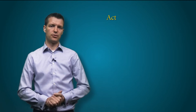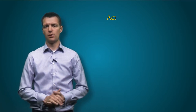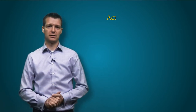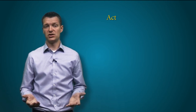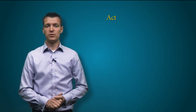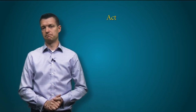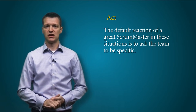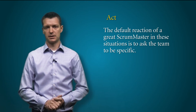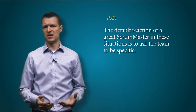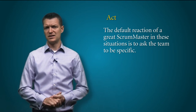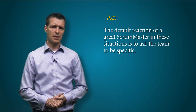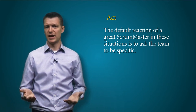Act on improvements. Teams often come up with 'we should communicate better' in their retrospectives, and there's nothing wrong with that. Who can argue against improved communication? You might even see some improvements just by noting the problem. However, the default reaction of great scrum masters in these situations is to ask the team to be more specific: Who needs to communicate better with whom? What do they need to communicate better about? When does this communication need to happen? How will we know communication is good enough?